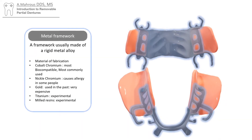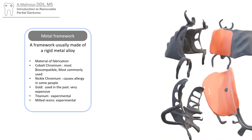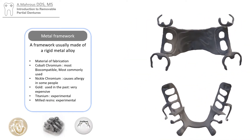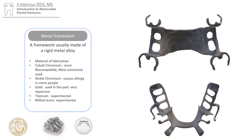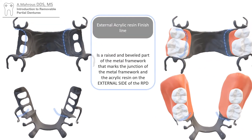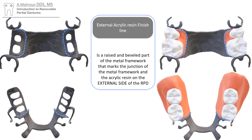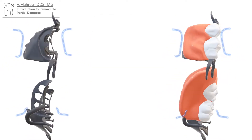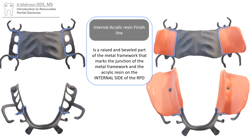The framework is usually made out of a rigid metal, most commonly cobalt-chromium, but other metals are used as well — we will cover those in later videos. Where the outside of the metal framework meets the outside of the denture base, we have an external acrylic resin finish line, and on the inside, we have an internal acrylic resin finish line.